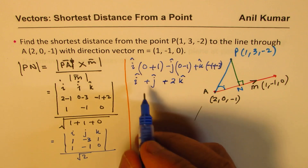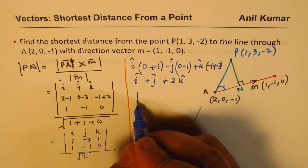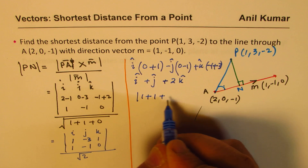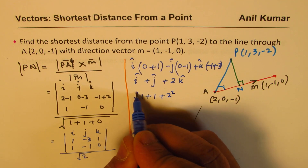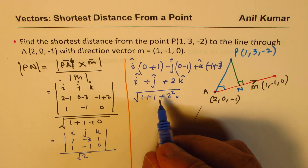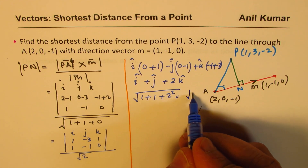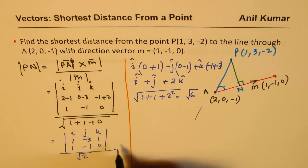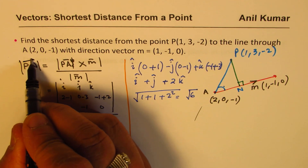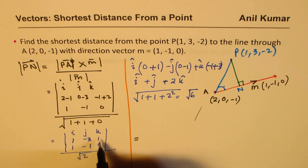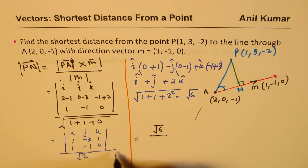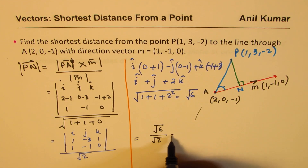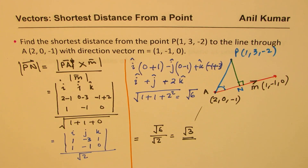The magnitude of the distance PN equals √6 in the numerator divided by √2 in the denominator, giving √3 as our answer. That becomes the shortest distance from the external point P to the given line.